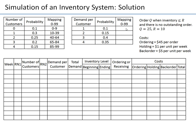Similarly, we need to map random numbers to demand per customer. One unit of demand has 10% probability, mapped to numbers 0–9. Then 15% maps to 10–24. The next range maps to 25–64, which is 40 numbers. And 35% maps to 65–99. So we now have our random number mapping for both number of customers and demand per customer.